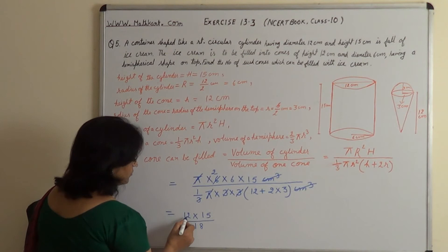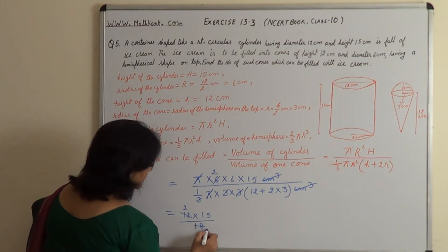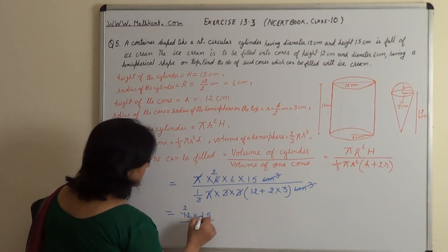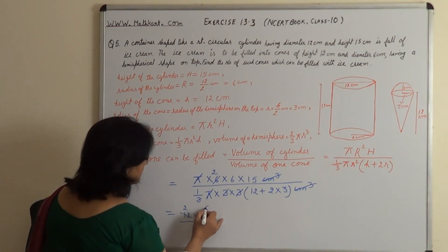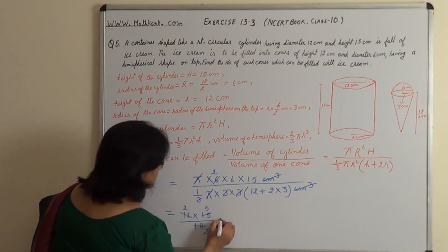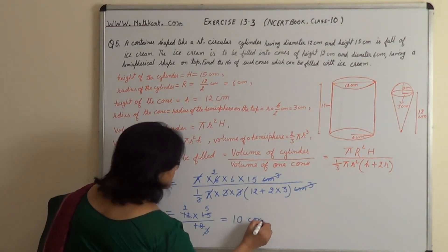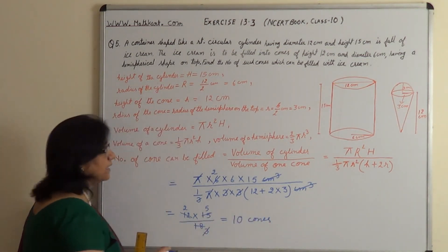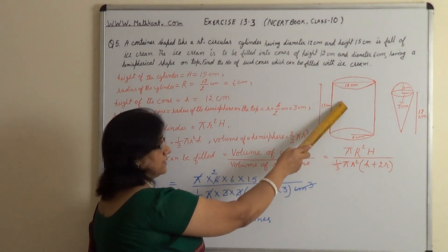The cubic centimetre units cancel out. The (1/3) in the denominator and the 3 also cancel. This 3 in the denominator cancels with the 6 in the numerator to give 2, and π cancels with π. We get 6 × 2 × 15 upon 18, which reduces — dividing 12 and 18 by 6 gives 2 and 3, then 3 cancels with 15 to give 5. So 2 × 5 = 10. Therefore, 10 cones can be filled with ice cream.